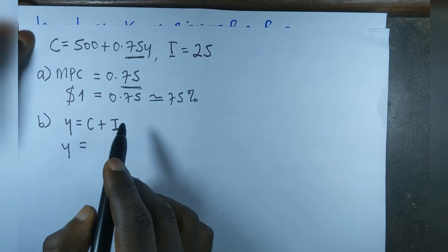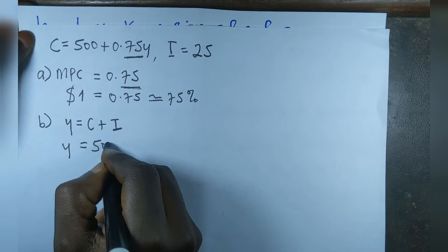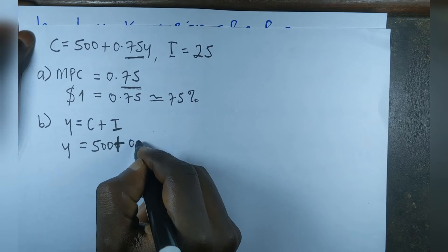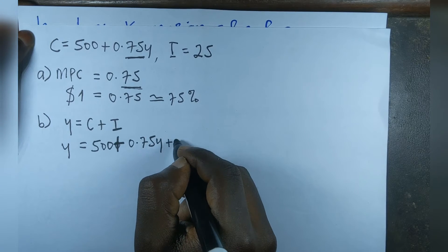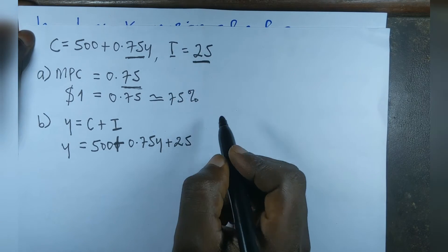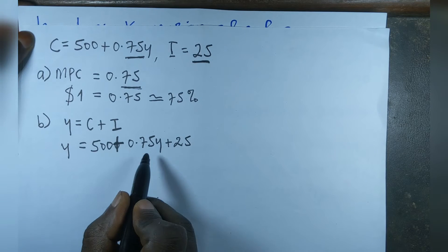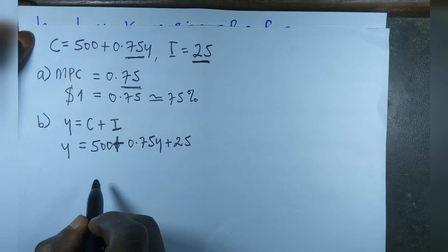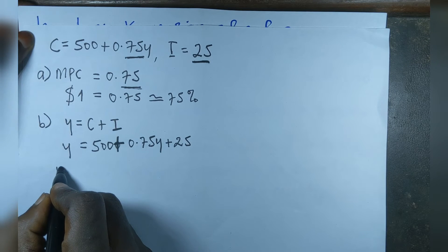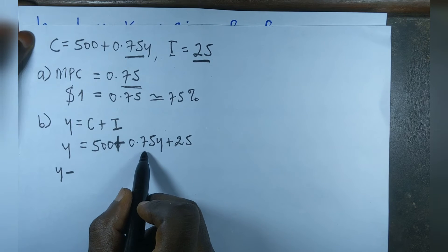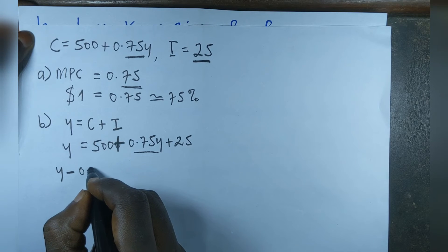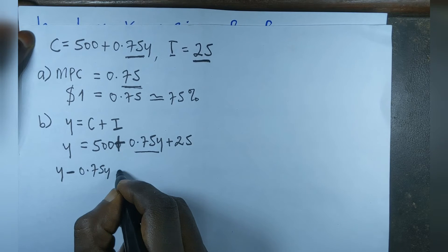We now substitute the consumption function in place of C, so we have Y equal to 500 plus 0.75Y plus 25, where 25 represents our investment expenditure. We collect like terms, moving 0.75Y to the left-hand side, giving us Y minus 0.75Y equal to 500 plus 25.